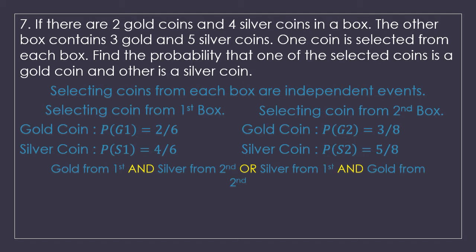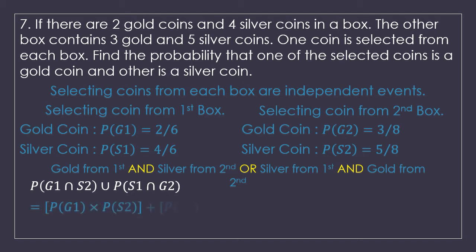The words are: gold from first AND silver from second, OR silver from first AND gold from second. In symbols: (G1 intersection S2) union (S1 intersection G2). Because these events are independent, we multiply them: P(G1) × P(S2) + P(S1) × P(G2). All four probabilities are already available, so we put the values into the equation and multiply within the brackets.